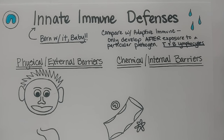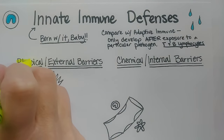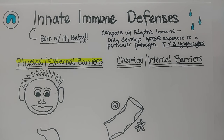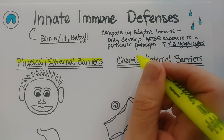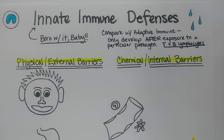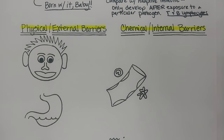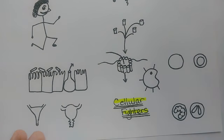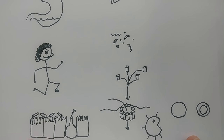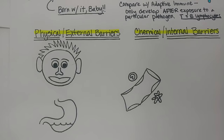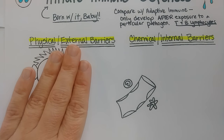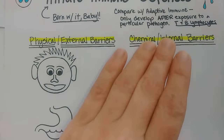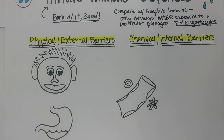Now I'll give you the different kinds of innate immune defenses, which can be divided into a few categories. First, they can be physical or external barriers like unbroken skin and mucous membranes. Or they can be chemical and internal barriers — things like inflammation, antimicrobials, and complement. The third category is cellular fighters. So innate immune defenses boil down to: physical external barriers, chemical internal barriers, and cellular forces — basically different kinds of white blood cells.